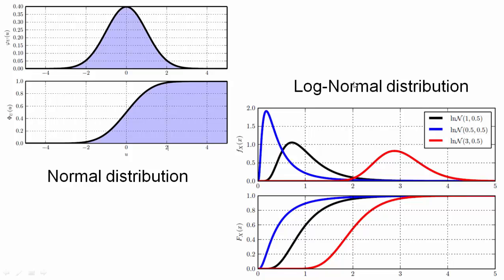For a specified type of probability distribution, the random variable is typically characterized by either its moments or by its parameters. The first moment of a random variable is the mean — a measure for the average behavior. The square root of the second centralized moment is the standard deviation, a measure for the variability. A normalized measure for the variability is the coefficient of variation, defined as the standard deviation divided by the mean. A random variable can also be characterized by its parameters; for example, the log-normal distribution is often characterized by the mean and standard deviation of the underlying normal distribution.